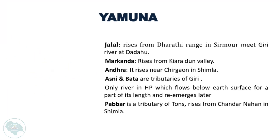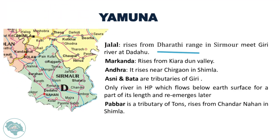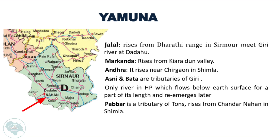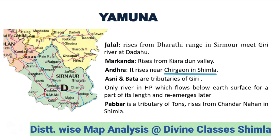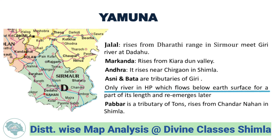Jalal is a tributary of Giri which rises from the Dharati Range in Sirmaur and meets Giri River at Dadahu. Markanda rises from the Kiaradun Valley, and Nahan town is situated on its bank. Andhra is a tributary of Pabbar and rises from Chirgaon in Shimla. Asikani and Bata are tributaries of Giri. Notably, Bata is the only river in Himachal that flows below the earth's surface for part of its length and re-emerges later. Pabbar is a tributary of Tones which rises from Chandranahan in Shimla.